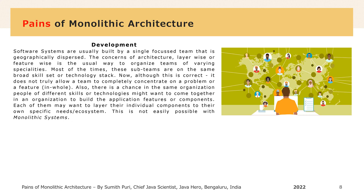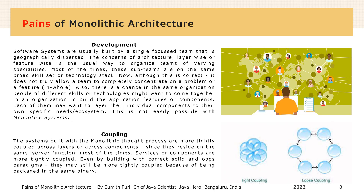In software engineering, coupling is the degree of interdependence between software modules — a measure of how closely connected two modules or components are. Systems built with the monolithic thought process are more tightly coupled across layers or across components, since they reside on the same server most of the times. Even by using correct SOLID and OOP paradigms, they will still be more tightly coupled because of being packaged in the same binary.